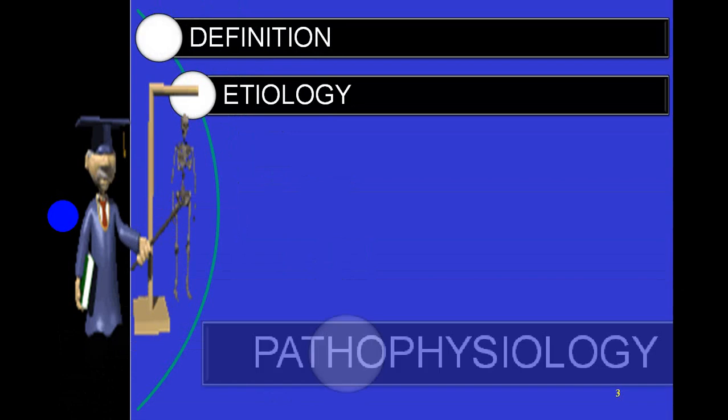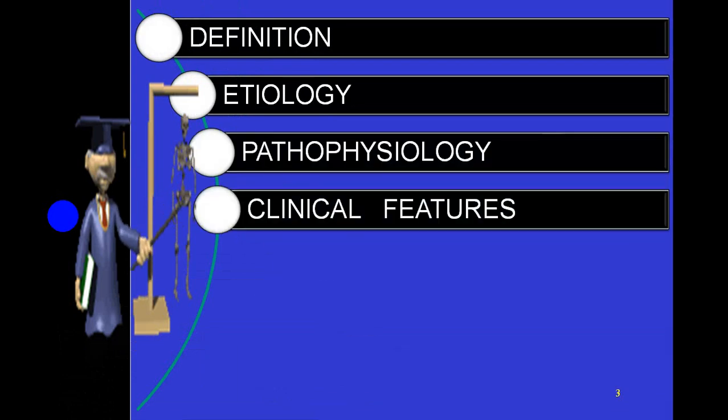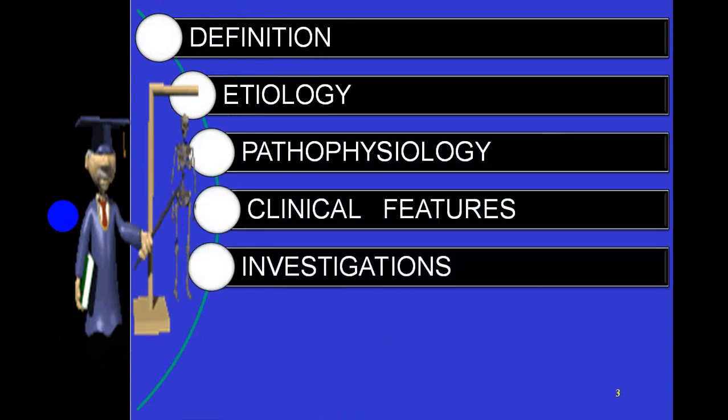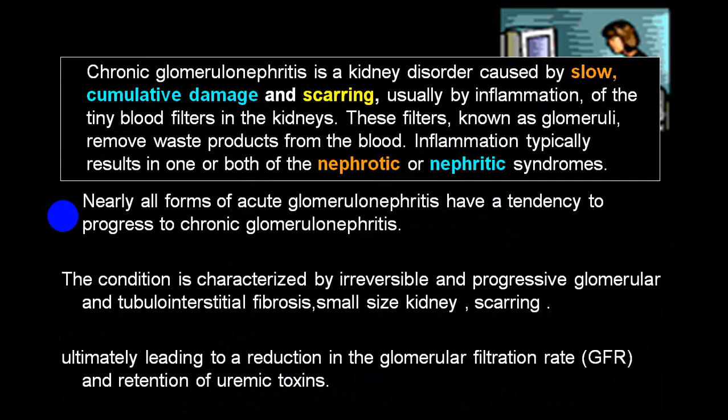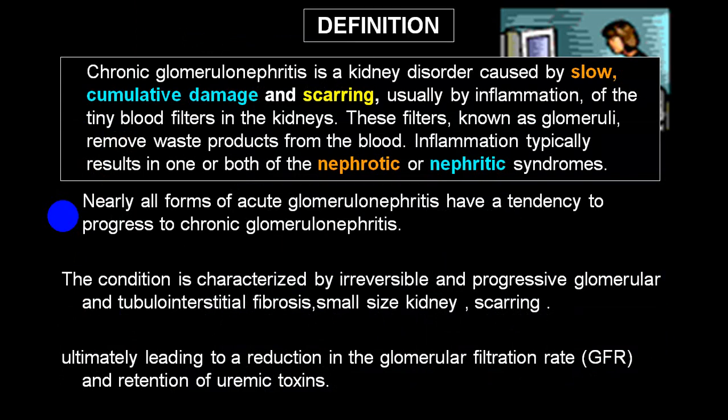We'll cover definition, etiology, pathophysiology, clinical features, investigations, differential diagnosis, treatment, and complications. The meaning of chronic glomerulonephritis — it is basically a kidney disorder where the damage is very slow. There is cumulative damage and scarring of the kidney, usually caused by inflammation of the tiny glomerulus. The glomerulus removes waste products from the blood.